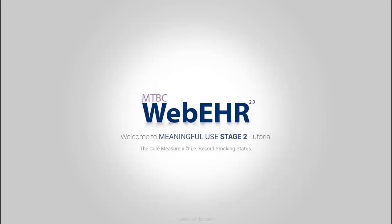Welcome to the MTBC Web EHR 2.0 tutorial for Meaningful Use Stage 2 — how to achieve core and menu measures. In this tutorial we will look at core measure number 5: Record Smoking Status.